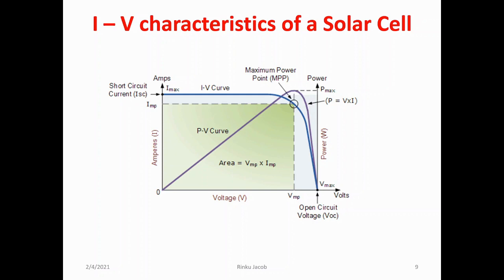With the solar cell open-circuited, that is not connected to any load, the current will be at its minimum, i.e. 0, and the voltage across the cell is at its maximum, known as the solar cell's open circuit voltage or VOC. At the other extreme, when the solar cell is short-circuited, that is the positive and negative leads connected together, the voltage across the cell is at its minimum, i.e. 0, but the current flowing out of the cell reaches its maximum, known as the solar cell's short circuit current or ISC. The span of the solar cell IV characteristics curve ranges from the short circuit current ISC at 0 output volts to 0 current at the full open circuit voltage VOC.